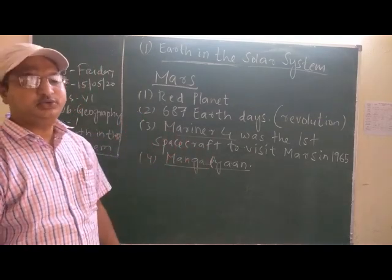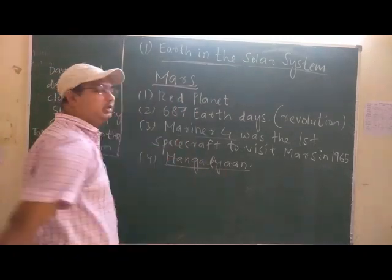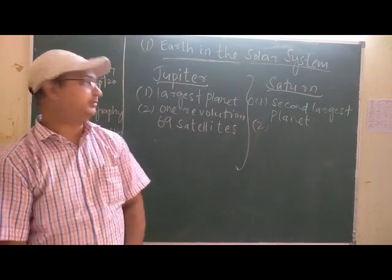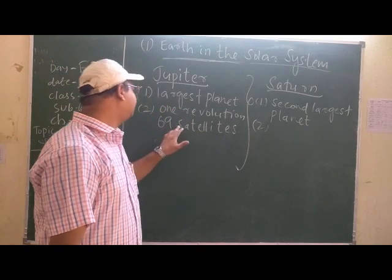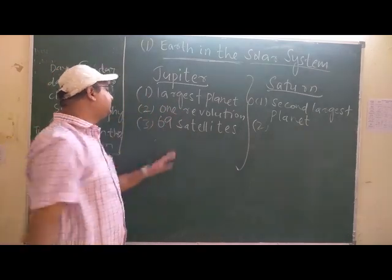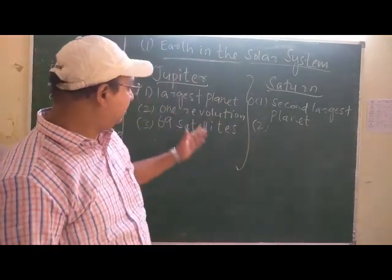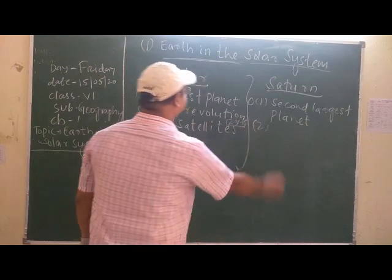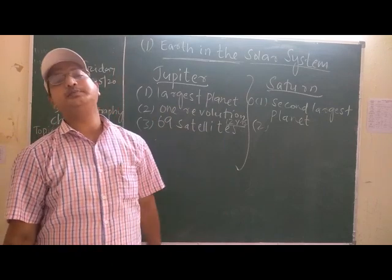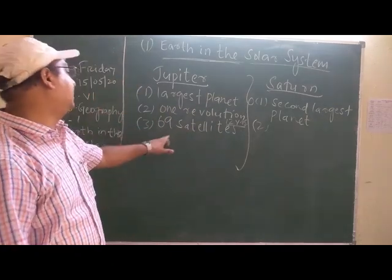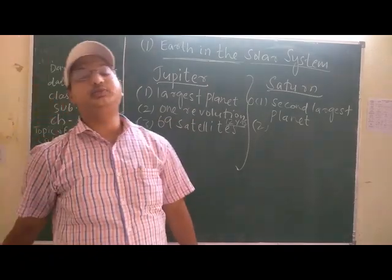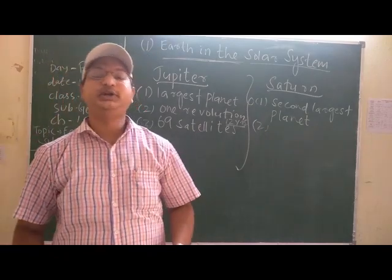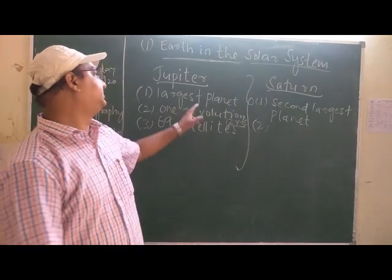After Mars, the next planets — Jupiter, then Saturn, Uranus, Neptune — they are all outer planets. Jupiter is the largest planet in the solar system. It has 69 satellites in its orbit and it completes one revolution around the sun in 12 years. It has 69 satellites — the highest in the solar system. Our Earth has one natural satellite, the moon, but Jupiter has 69 satellites. It is so large that all the planets can fit inside the planet Jupiter.